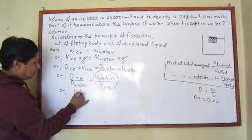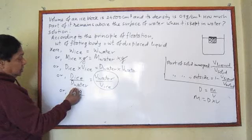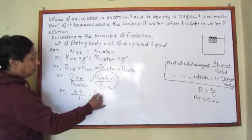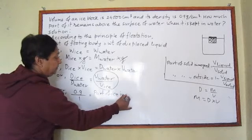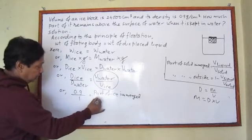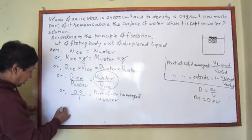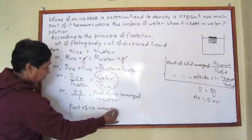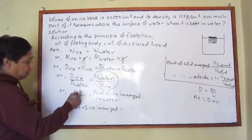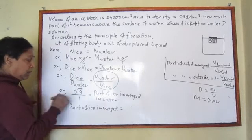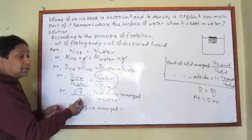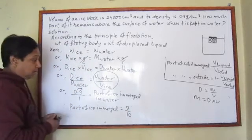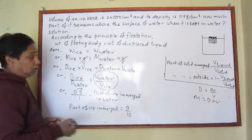The density of ice is given as 0.9 grams per cubic centimeter, and the density of water is 1 gram per cubic centimeter. So V_water upon V_ice equals 0.9 divided by 1. Expressing this as a fraction: the part of ice immersed in water equals 9 by 10. This means 9/10 of the ice is immersed in water.